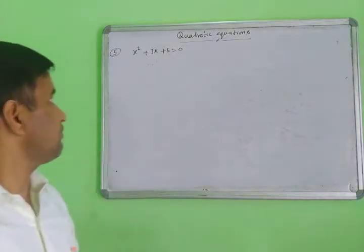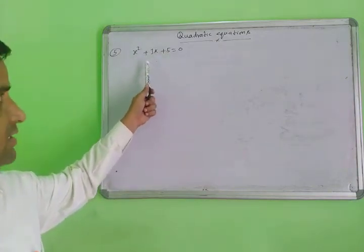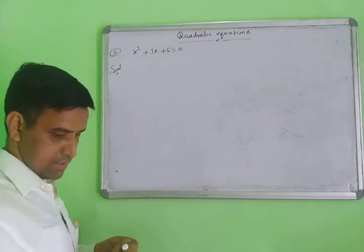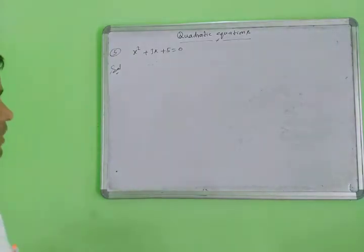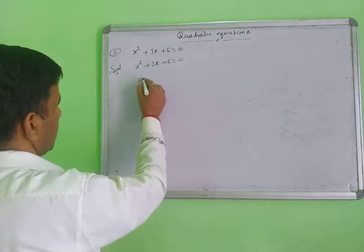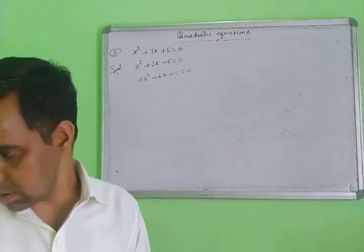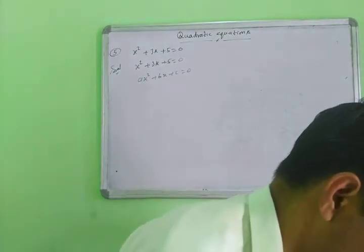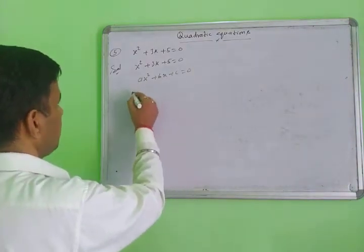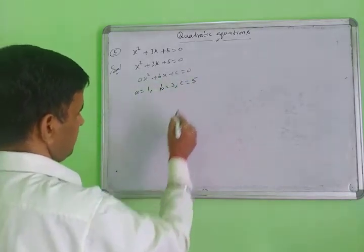Next question: x² + 3x + 5 = 0. Comparing with ax² + bx + c = 0, we get a = 1, b = 3, and c = 5.